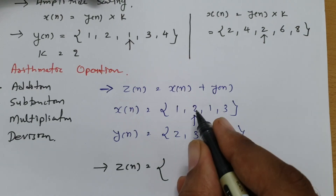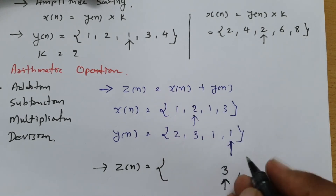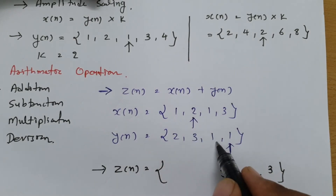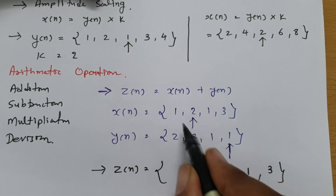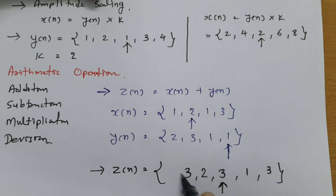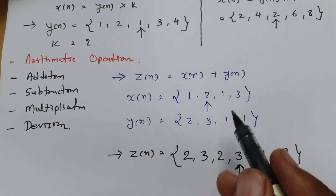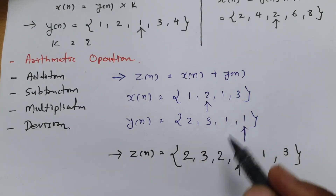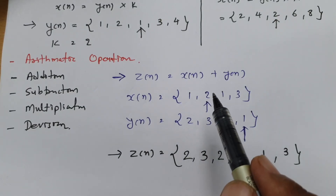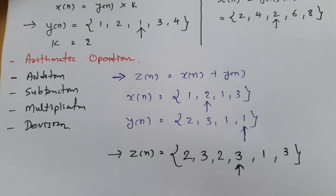Moving to the right of the reference: y of n has no coefficient there but x of n has 1, so 1 plus 0 equals 1, and 3 plus 0 equals 3. Moving to the left: 1 plus 1 equals 2. Further left, x of n has no data so y of n gives 3 plus 0 equals 3, and 2 plus 0 equals 2. We perform basic arithmetic with respect to position and reference for addition, subtraction, multiplication, or division.